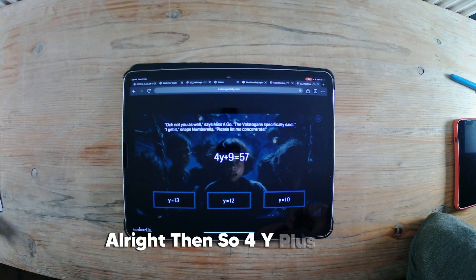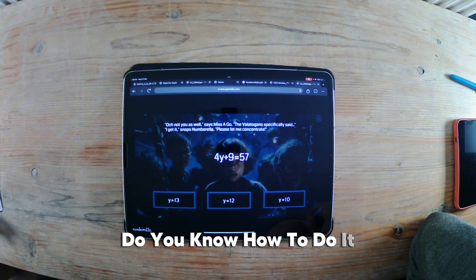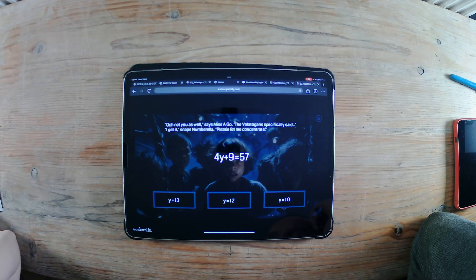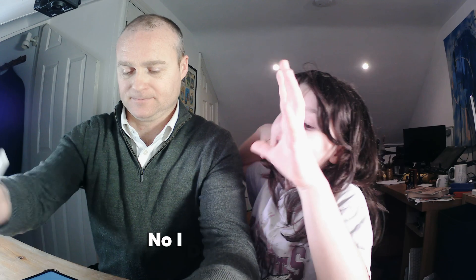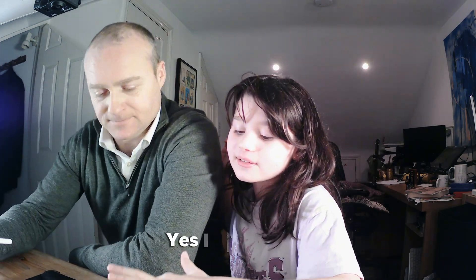Alright then. So, 4y plus 9 equals 57. Do you know how to do it? No, no, no, no, no, no. Help? No, no, no, no, I don't need help. I don't need help. Yes, I don't need help. Go on then.